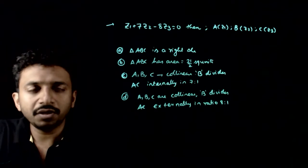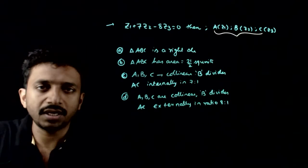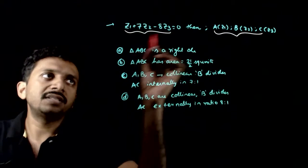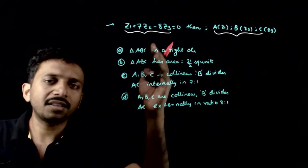Welcome students. This question is given that you have three points A, B, C corresponding to the complex numbers Z1, Z2, Z3 on the Argand plane, and Z1 plus 7Z2 equals 8Z3 is given.